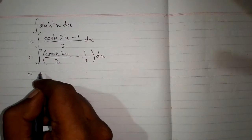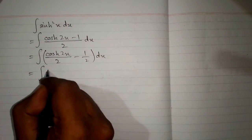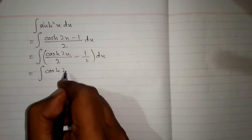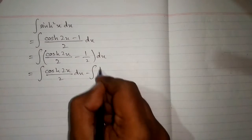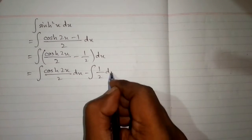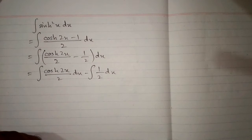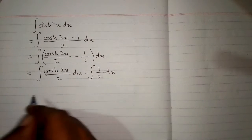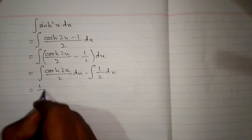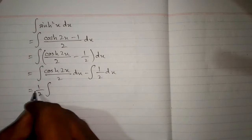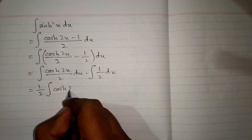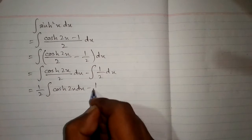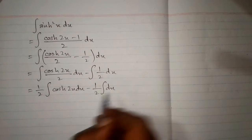Now we will apply the integral on both terms. So we have the integral of hyperbolic cosine of 2x upon 2 minus the integral of one half dx. The constant 1 upon 2 can be written outside the integral sign, giving us one half times the integral of hyperbolic cosine of 2x, minus one half times the integral of dx.